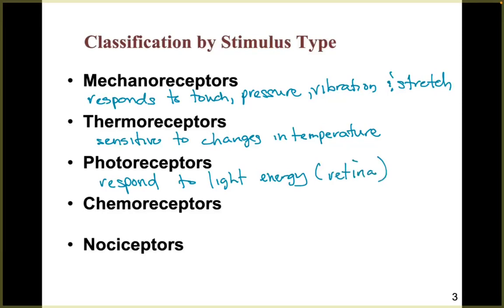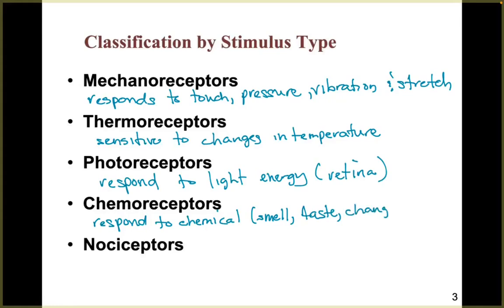Chemoreceptors respond to chemicals, and you'll focus on these more in Anatomy and Physiology 2. When you bring in food, those molecules allow for things like taste. When food is cooked, it releases chemicals into the air for smell. You can also get changes in blood chemistry — for example, sugar and the homeostatic effects of diabetes — or changes related to metabolism, breathing rate, and changes in pH or carbon dioxide levels in the body.